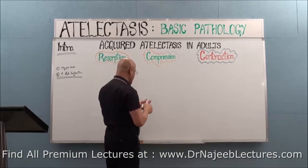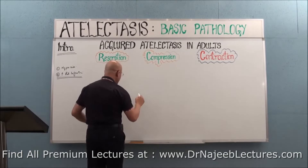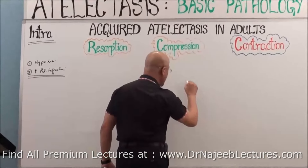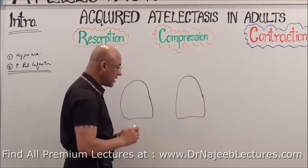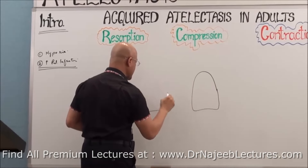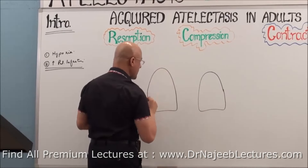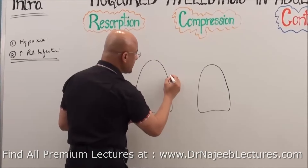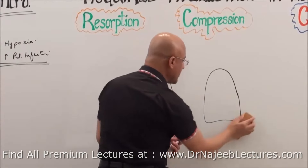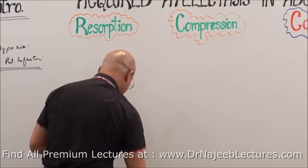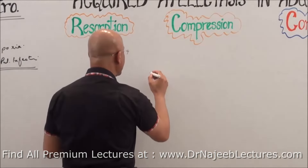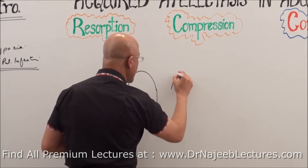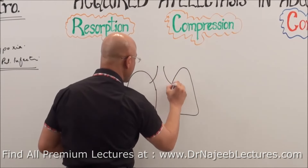Let me tell you what is the difference between atelectasis and consolidation. Let's suppose here is one lung, this is a lung of another patient. Let's make it two lungs. I will show one lung has atelectasis and the other lung has consolidation. Let's suppose this is the right lung and this is the left lung.